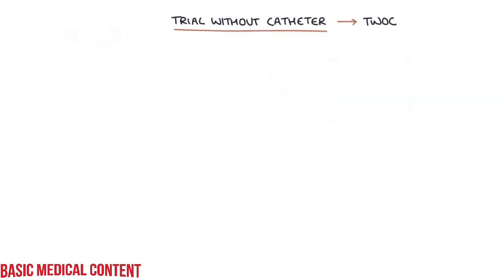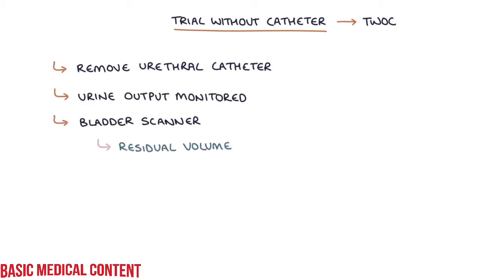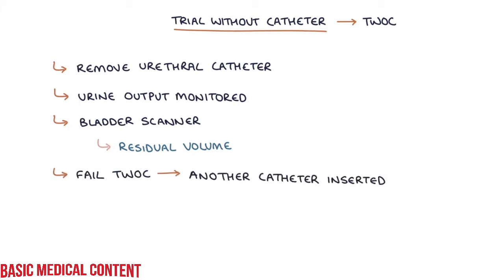Let's talk about a trial without catheter, or TWOC. A trial without catheter involves removing a urethral catheter to see if the patient can manage without it. After the catheter is removed, urine output is monitored and a bladder scanner is used to make sure there's minimal residual volume left in the bladder after passing urine. Patients may fail the TWOC, meaning another catheter needs to be inserted.